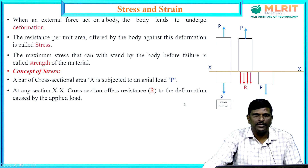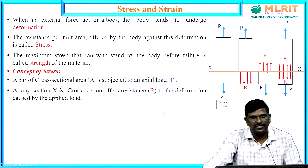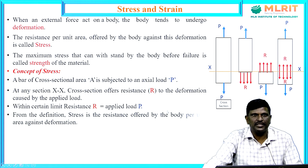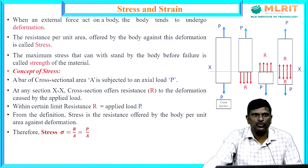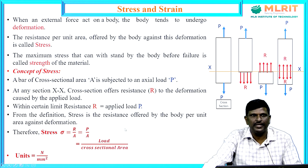Looking at the section XX, the resistance offered against deformation is R, and within a certain limit, resistance is exactly equal to applied load P. From the definition of stress, stress is the resistance offered by the body per unit area. So stress equals R divided by A. Since R equals P, stress is given by P by A — load divided by area. Stress is denoted by sigma and its units in the SI system are Newton per mm square. Stress equals load divided by cross-sectional area.